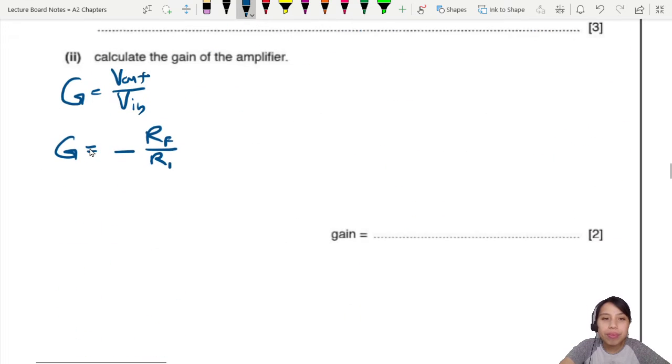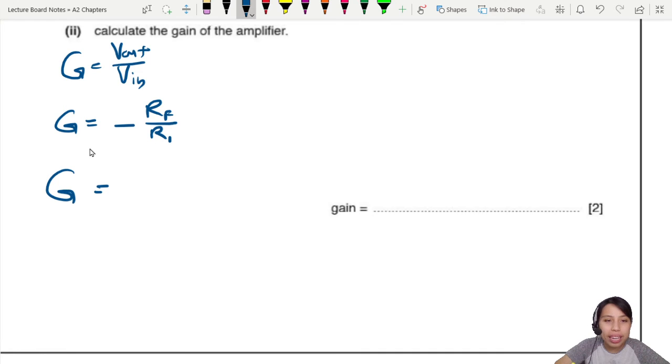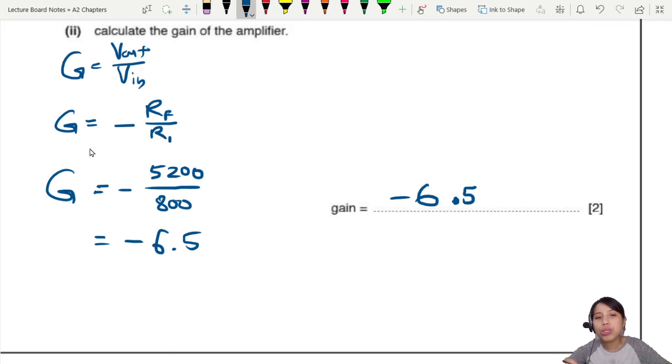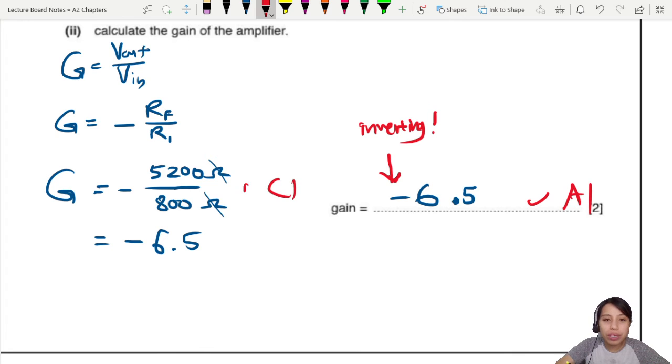The gain will be 5.2k or 5200 ohms over 800 ohms. This will give you negative 6.5. The negative here is important because it tells you that this is an inverting amplifier. One mark for subbing into the equation. You must remember this equation - either write it down in your notes or know how to derive it.